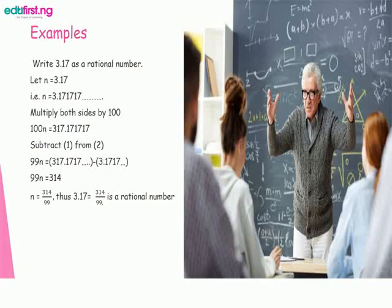For example, write 3.17 repeating as a rational number. Let n equal 3.17 repeating, that is, n equals 3.171717 to infinity. Now we can multiply both sides by 100. We have 100n equals 317.1717.